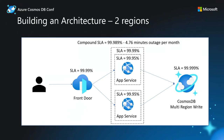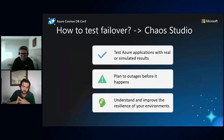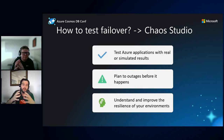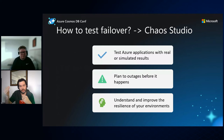Adding a third region provides only a slight SLA improvement — the numbers don't change dramatically between two and three regions. That's not to say three regions are unnecessary; they may be needed for better response times for users in different geographies. But additional regions beyond two don't significantly impact overall availability. To test this, Azure has a relatively new solution called Azure Chaos Studio, launched a few months ago.